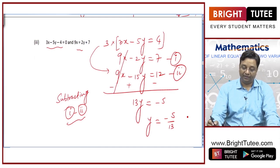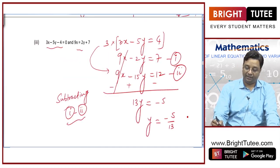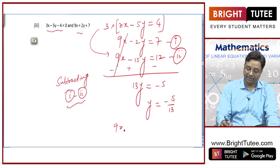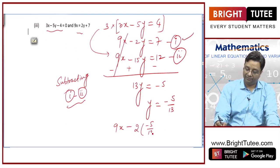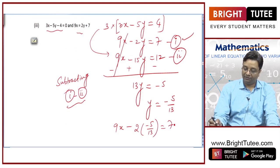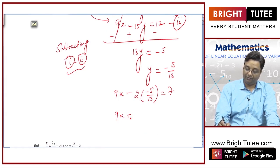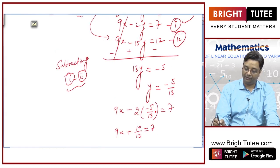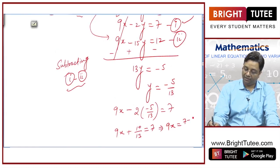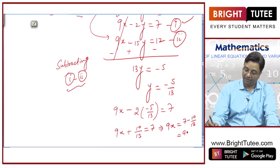So, I have got the value of y. Now I will replace it in equation number 1. So, 9x minus twice of minus 5 by 13 is equal to 7. So, 9x plus 10 by 13 is equal to 7. So, 9x is equal to 7 minus 10 by 13, which is 13 into 7 minus 10, all over 13.